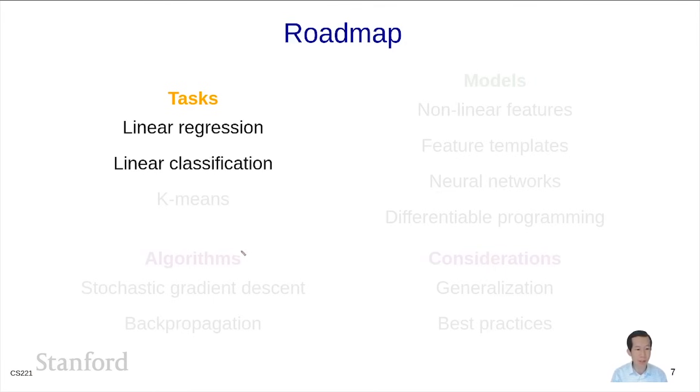Then we're going to step over to algorithms and introduce stochastic gradient descent, which is going to give us major speed-ups over gradient descent.